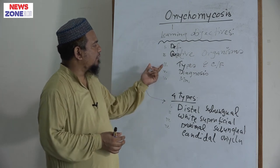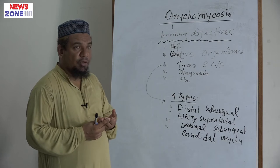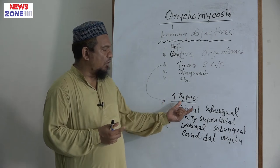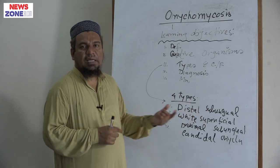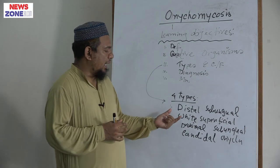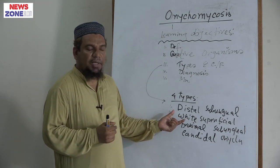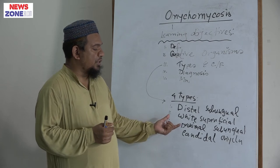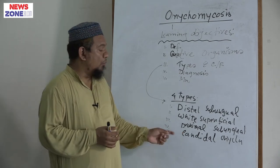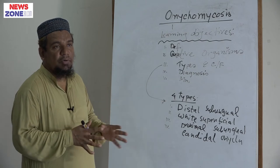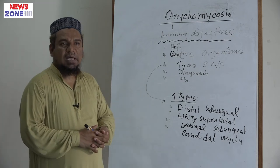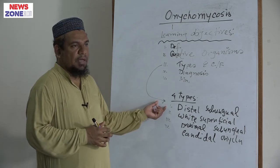What are the types of onychomycosis? Basically, four types. The most common is distal subungual onychomycosis. Another one is white superficial onychomycosis. The third is proximal subungual onychomycosis, and lastly, there is candidal onychomycosis. Mostly, the distal subungual type is the most common — around 75 percent of all onychomycosis.